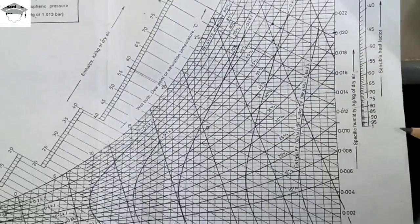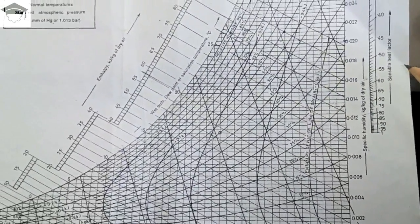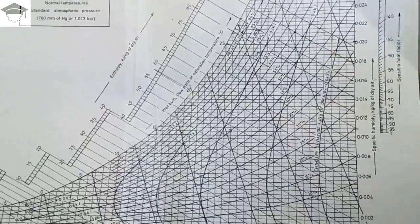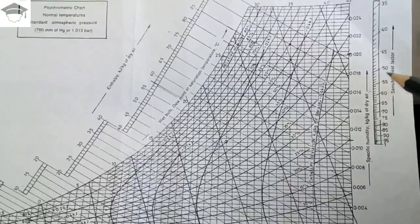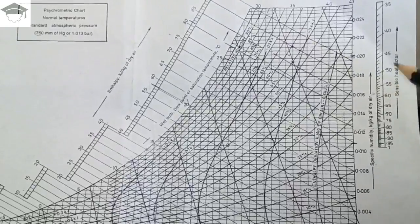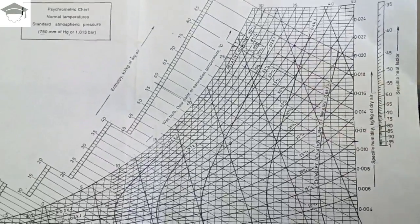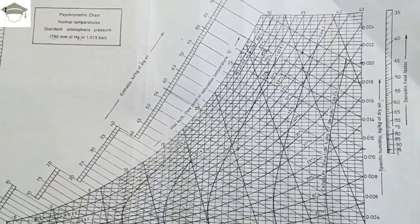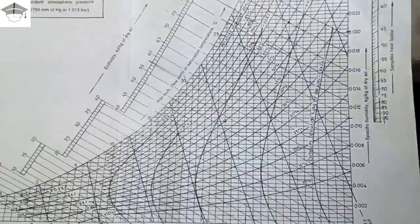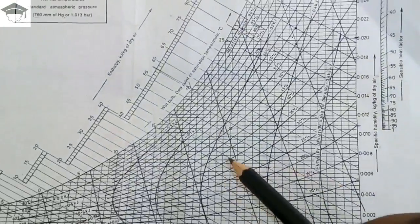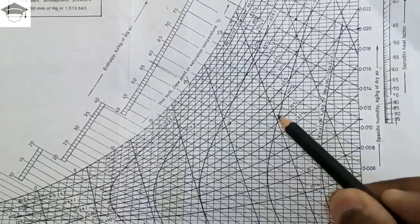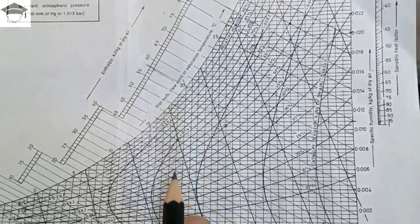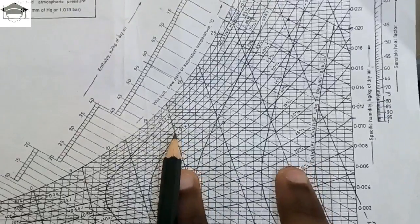The sensible heat factor is commonly asked about in exam questions. Sensible heat factor equals sensible heat divided by the sum of latent heat plus sensible heat. With two points on the chart joined by a line, the horizontal component represents sensible heat and the vertical component represents latent heat, giving the total heat.